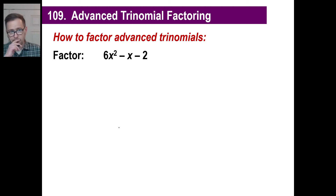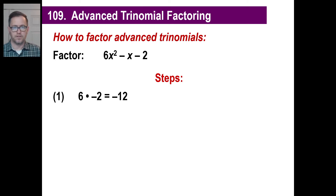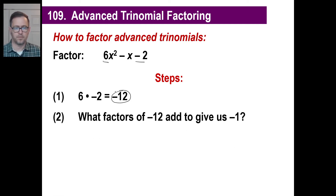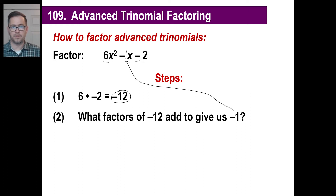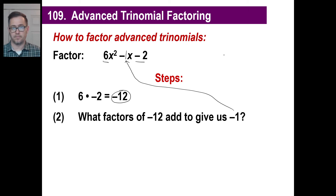Go ahead and write these steps down. Here's a trinomial starting with 6x squared. Step one: multiply 6 times negative 2 to get negative 12 — hold onto that number. Step two: find factors of negative 12 that add to give us negative 1, which is the middle coefficient. What two numbers multiply to give negative 12 and add to give negative 1? That would be negative 4 and 3.